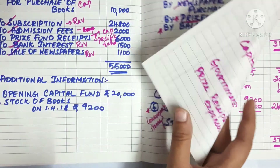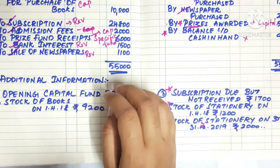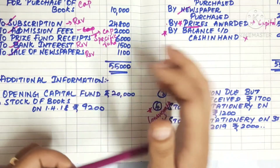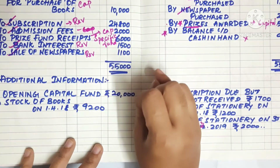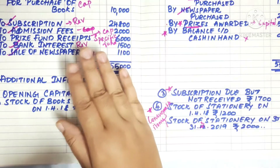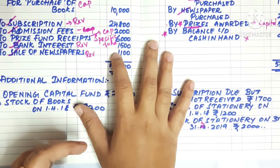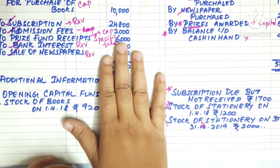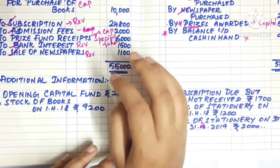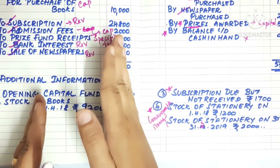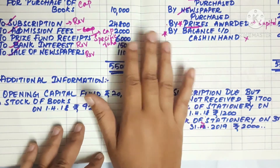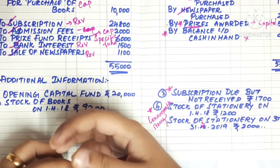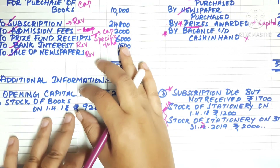We will take the basic method to complete this problem. The sum is a big one — some parts are tough but some are easy. You need to use the adjustments carefully for the income and expenditure account. Focus on the adjustments and check for any doubts in the comments. This is chapter 2. In the next video, we will discuss chapter 3 on partnership — admissions and retirement. Stay tuned and keep learning. Thank you.